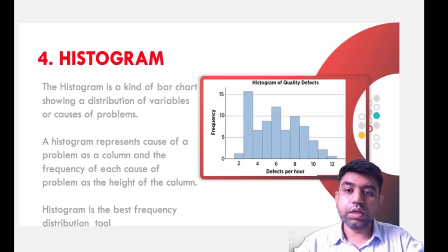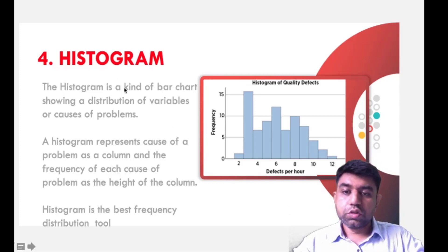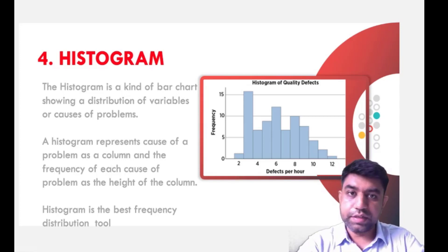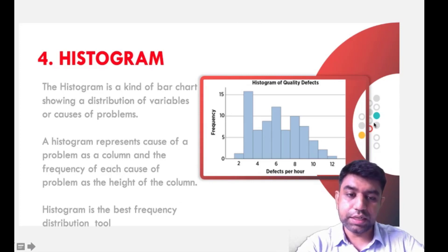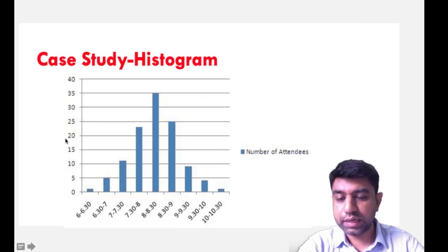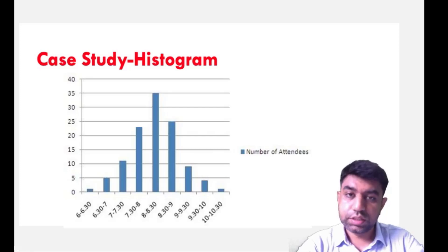The next tool is the histogram, used to find out the frequency or occurrence rate of defects. It uses a bar chart where the cause of a problem is represented as a column and the frequency of each cause as the height of that column. For example, consider online classes where we want to see at what time the number of students attending is highest. We represent time slots on the x-axis — from 6:00 to 6:30, 6:30 to 7:00, up to 10:00 to 10:30 — and number of attendees on the other axis.